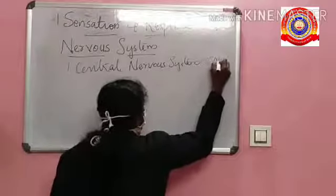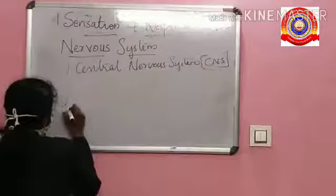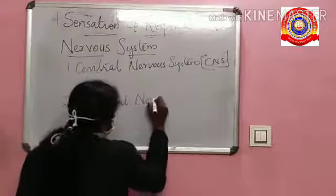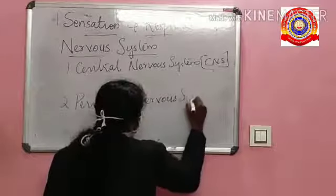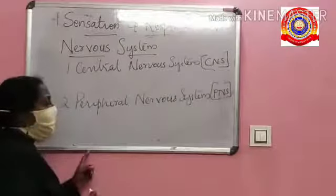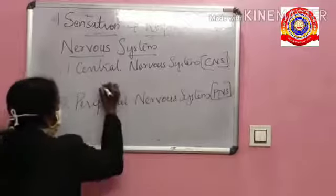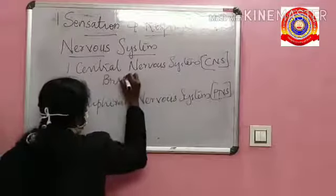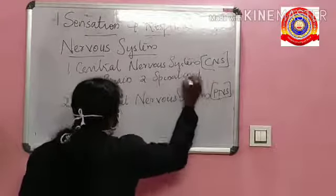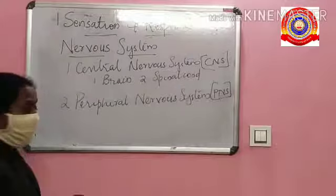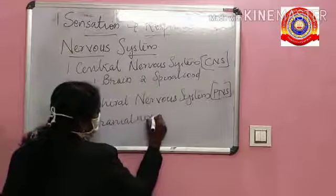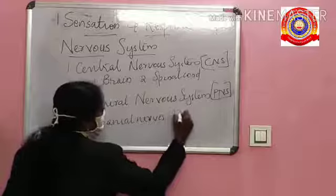The central nervous system, also called CNS, consists of the brain and spinal cord. The peripheral nervous system, also called PNS, consists of cranial nerves with 12 pairs and spinal nerves with 31 pairs.